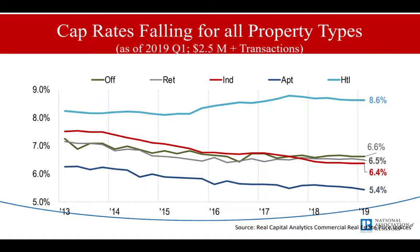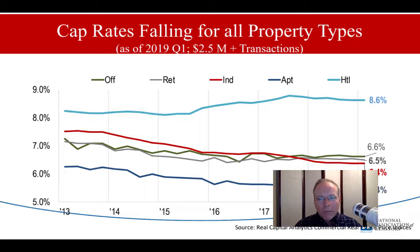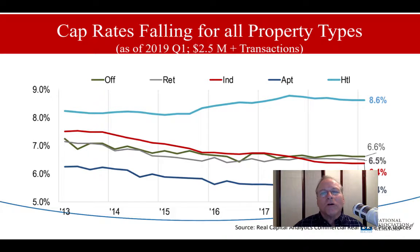On the other end, hotels come in at 8.6%. But of course, hotels is going to be a pretty active investment unless you're outsourcing all of the management. Everything else — the retail, the office space, and the industrial — is right around that 6.5% mark, which again means these real estate investors are very happy getting 6.5% returns. We certainly can offer them more in the note business, but you don't have to offer investors 10%, 11%, or 12% yields. Price these things accordingly.